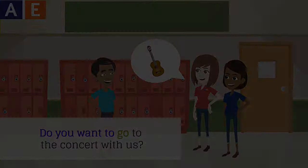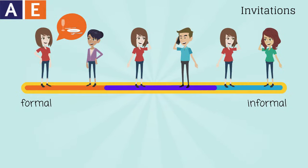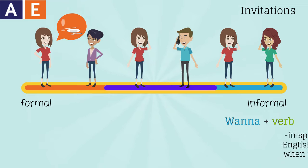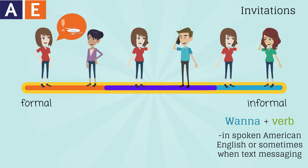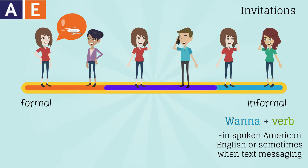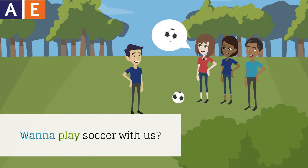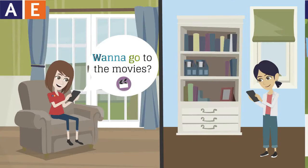The most informal way is 'Want to' plus a verb. We use 'want to' in spoken American English or sometimes when text messaging, but not in formal written American English. For example: 'Want to play soccer with us?' 'Want to go to the movies?'